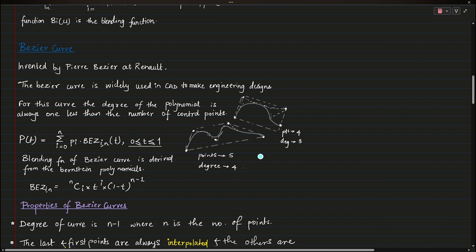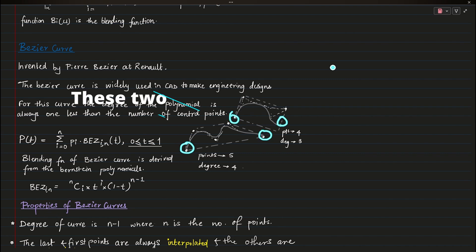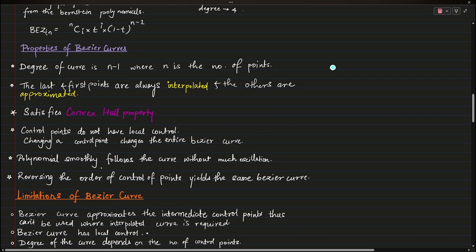Let's take a look at the Bezier curve. In a Bezier curve, the two endpoints are interpolated and the intermediate points are always extrapolated. These two points are interpolated and these two are extrapolated — that's something you have to remember. It was invented for CAD design. The blending function of the Bezier curve is derived from Bernstein polynomials, which is important as problems from previous year question papers have covered this.